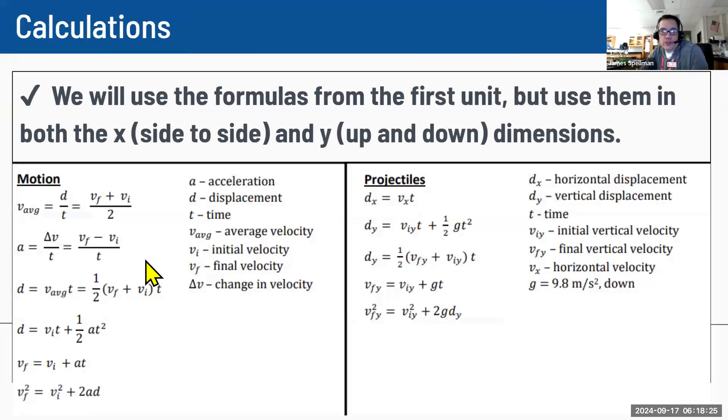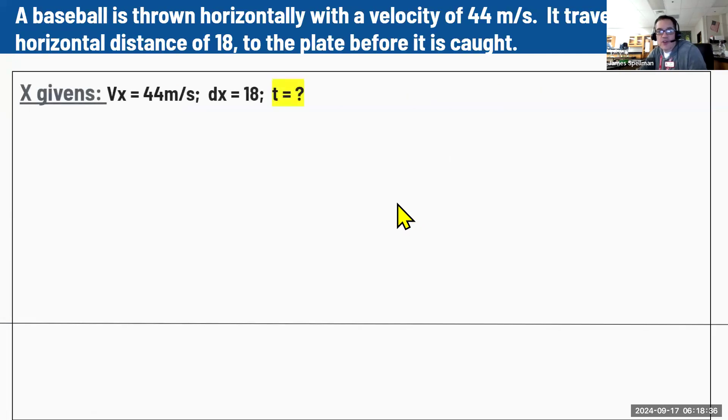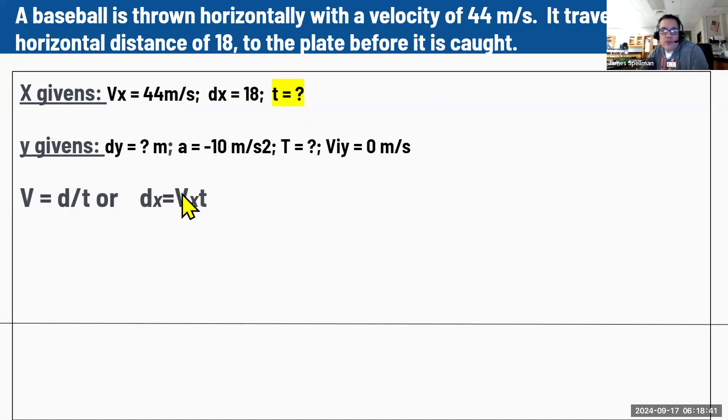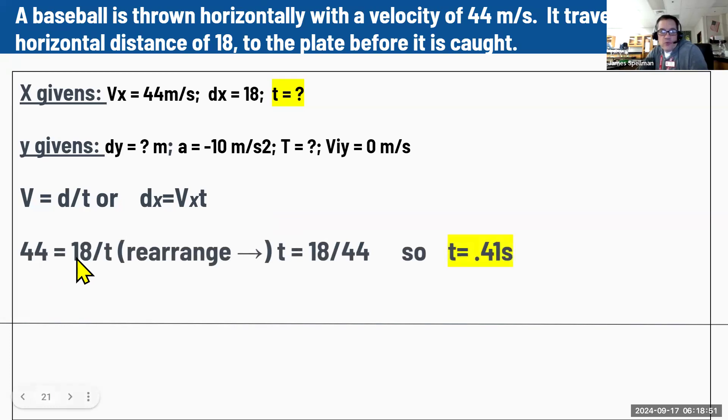So we can solve for time on the X side. You can go back to your formula sheet. You can use the formula over here on the left, velocity is distance over time, or we can use it where it's rearranged, which is distance equals velocity times time. We're solving for time, so we're going to have to rearrange it either way. You might want to pause when you need to, to write things down. So if we plug our numbers in, our velocity is 44 and our distance is 18. If we rearrange this to solve for the time and do the math, we end up getting the time being 0.41 seconds.